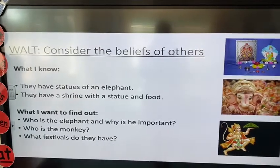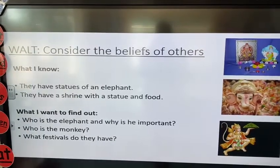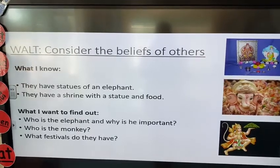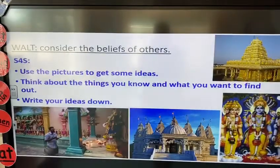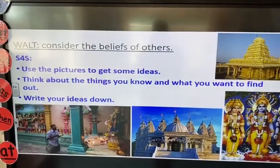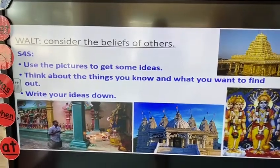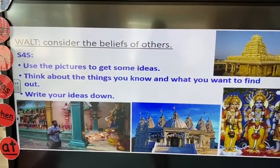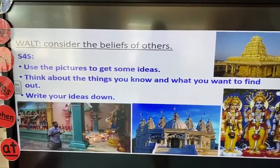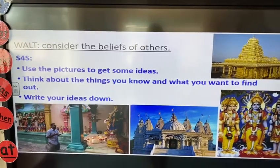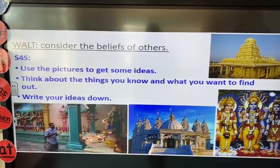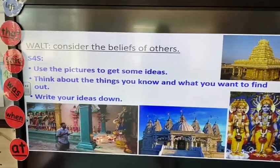You might have other pictures to look at and other questions of your own about the Hindu religion to ask. Going back to your sheet, you've already written what you know. Now put a subheading: 'What I Want to Find Out.' Examples might be: who is the elephant and why is he important? Who is the monkey? What festivals do they have? You might have things of your own you want to find out. Use the pictures on the slides to get ideas, write your ideas down underneath the subheadings, and send them in. Have fun. Thank you. See you next time.